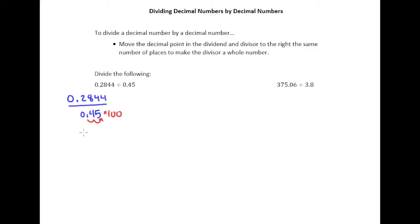But of course the rule of fractions is you can multiply by something like 100 if you want as long as you multiply by that same thing on top. So what we understand here is that that fraction 0.2844 over 0.45 is really an equivalent fraction to 28.44 divided by 45.